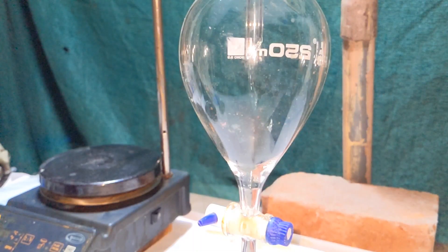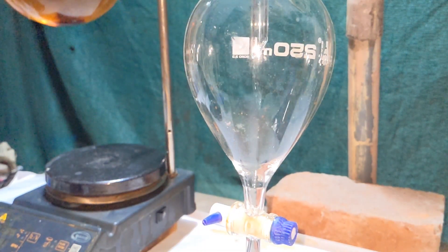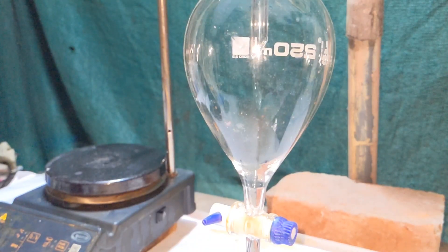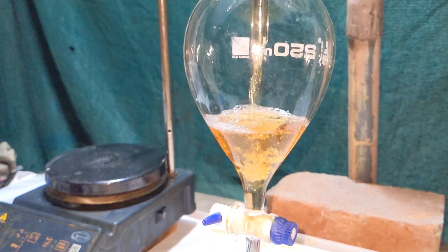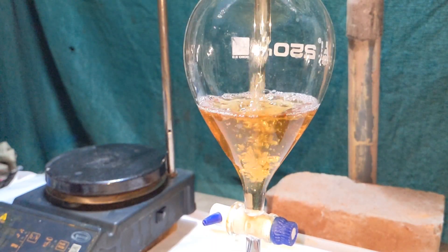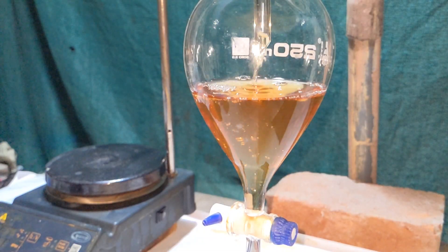The next procedure involves separation and purification of the two products. For that, a 250 ml separatory funnel was clamped on a stand and the contents of the round bottom flask were added to it using a funnel. Now we will extract the benzyl alcohol from it using diethyl ether.